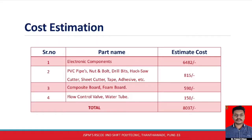This slide shows the cost estimation table, consisting of part names and estimated costs. Electronic components have an estimated cost of ₹6,482. Auxiliary parts such as PVC pipes, nuts, and bolts have an estimated cost of ₹815. Composite board and foam board have an estimated cost of ₹590. The flow control water tube has an estimated cost of ₹150. The total estimated amount is ₹8,037.